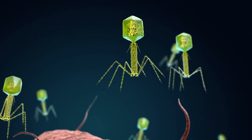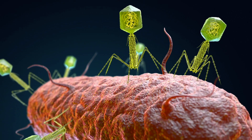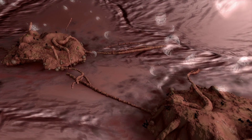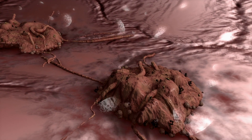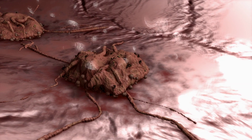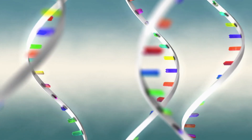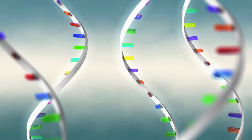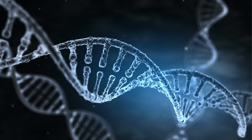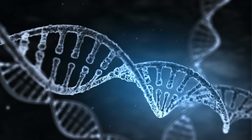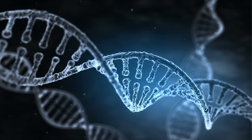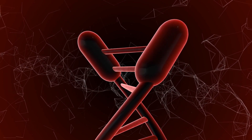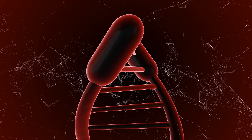The first theory that attempts to explain how viruses came into existence is the regressive hypothesis. This hypothesis states that viruses stem from cells that have atrophied to the point where they are simply just genetic material inside a case of protein. However, this hypothesis does not take into account that the genetic material of many viruses is solely composed of RNA, not DNA. If the regressive hypothesis was 100% true, all viruses would only be composed of DNA.